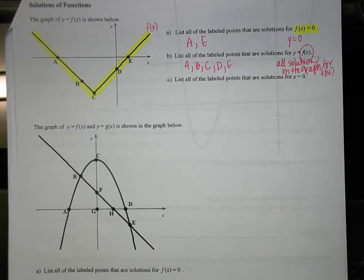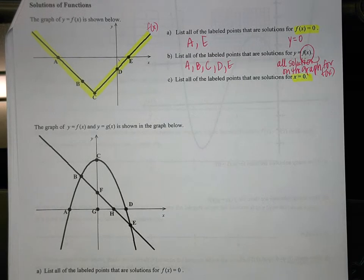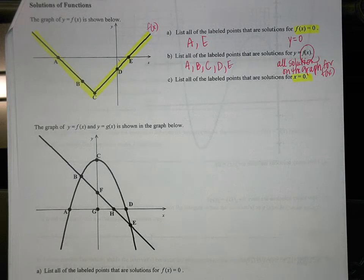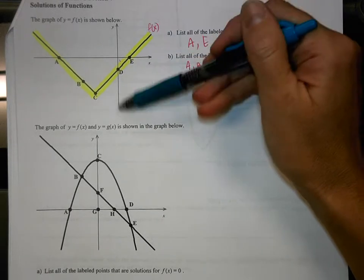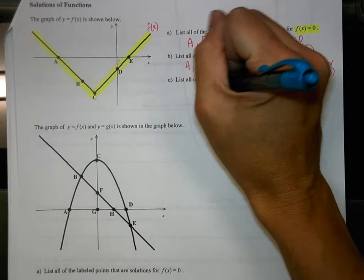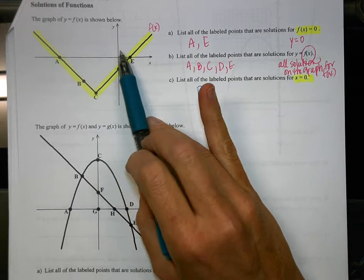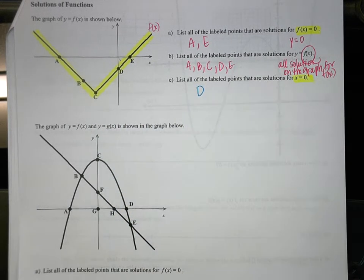Part C says list all the labeled points that are solutions for x equals zero. So x equals zero means you have a value for y and not for x — it would be where it's not moving anywhere on the x-axis and is moving somewhere on the y-axis. The only point where x equals zero, just on the y-axis, is point D. Point D is zero for x and then goes down on the y, so D is the only solution.